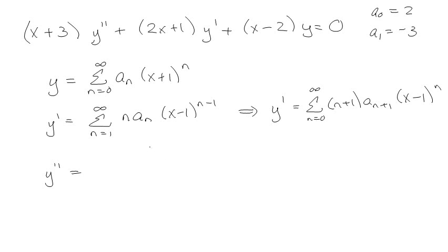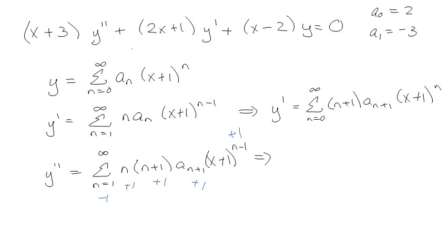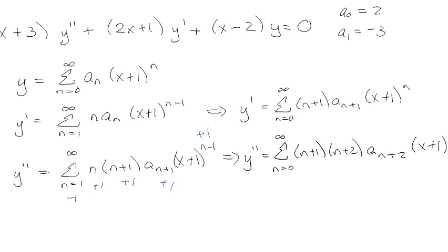Taking the derivative of that version: the sum starts at n equals 1, the n comes out front giving n(n+1)a_{n+1}(x+1)^{n-1}. Then adding one to all the indices and subtracting one from the exponent, I also get that y″ equals the sum from n equals 0 to infinity of (n+1)(n+2)a_{n+2}(x+1)^n.